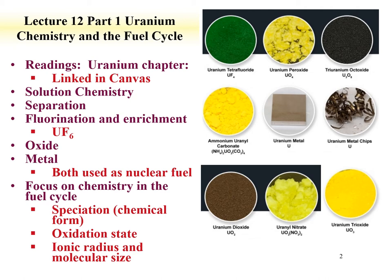We're going to develop an understanding of the fuel cycle chemistry based upon speciation—the chemical form of the uranium. The oxidation state of uranium is going to have a significant effect on chemical behavior. Uranium has multiple oxidation states, as many actinides do. We'll also talk about ionic radius and molecular size, and how that plays a role in some of this chemistry.